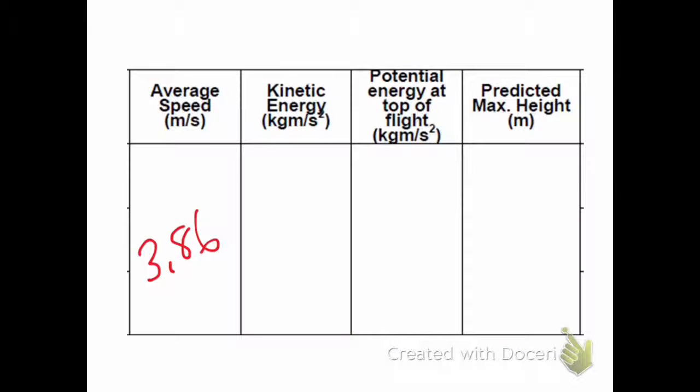So now you see I have our average speed brought over, and I'm looking at the middle portion of the data table, the kinetic energy, potential energy, and the predicted max height.